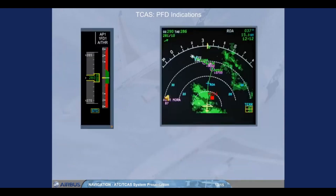In case of RA detection, on the PFD the vertical speed scale is now rectangular, the vertical speed needle is white, and the color of the digits depends on the area: red area indicates a vertical speed range with high risk of conflict, while the green area indicates the vertical speed range recommended.